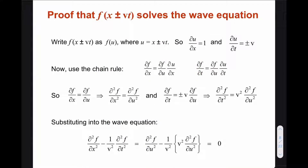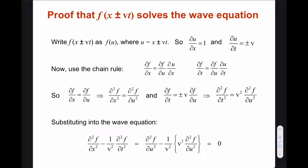Now let's check if the function f(x ± vt) solves the wave equation. For that, let us take u to be equal to x ± vt. In the wave equation, we need the second derivative of the function f with respect to both x and t. So let us find out what d/dx of f is. By using the chain rule, we can write d/dx of f to be equal to (d/du of f) times (d/dx of u).